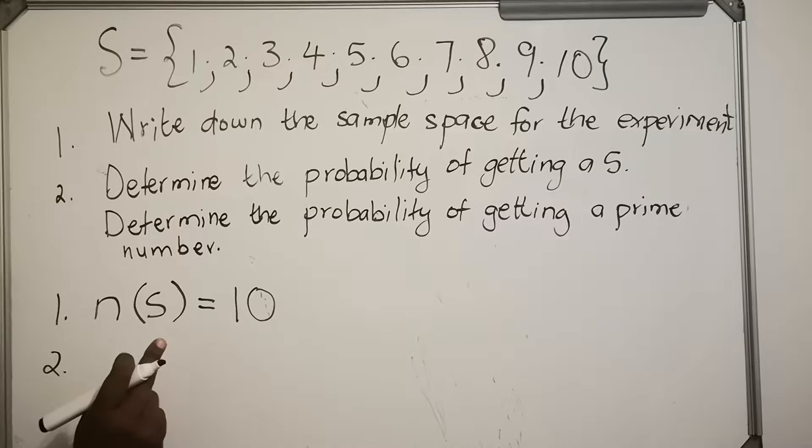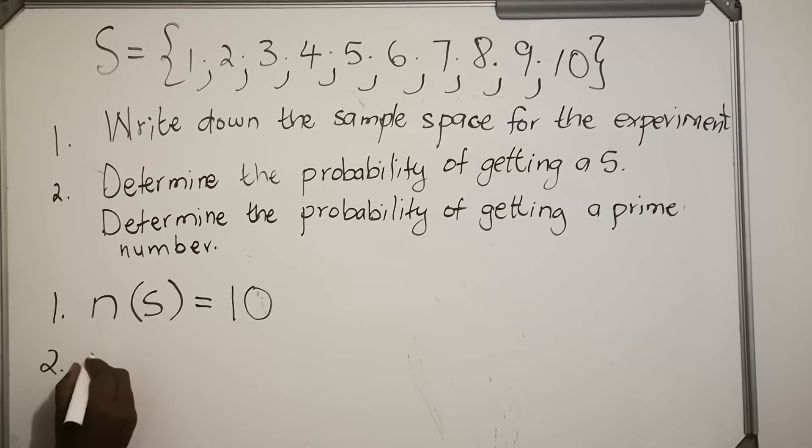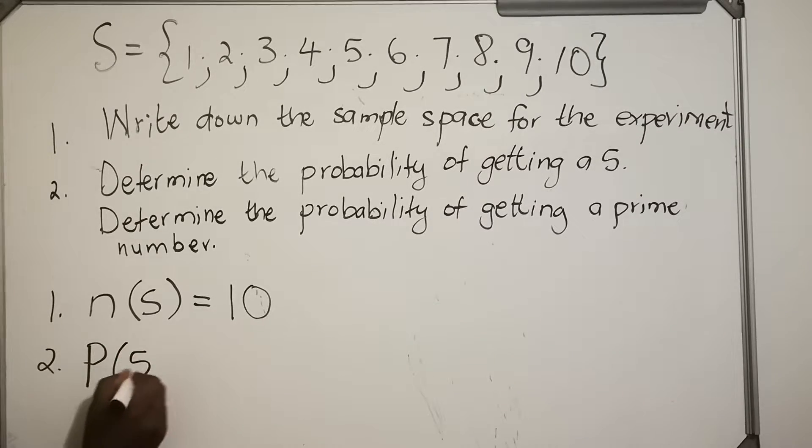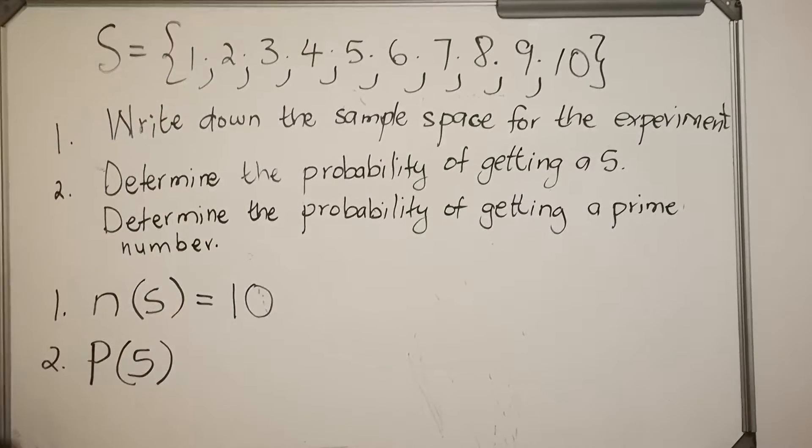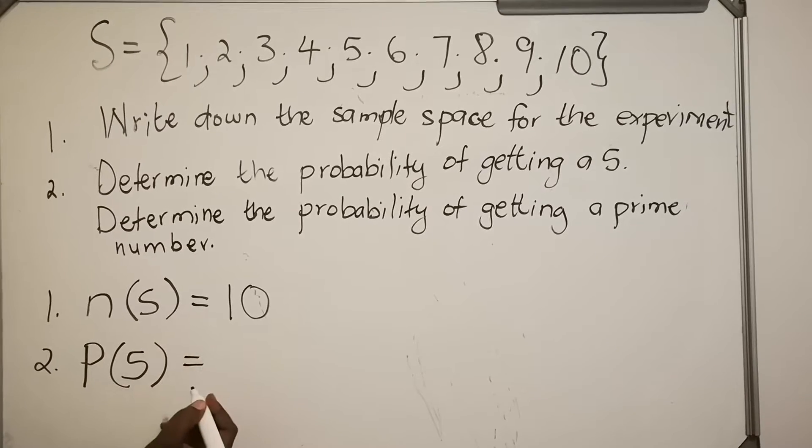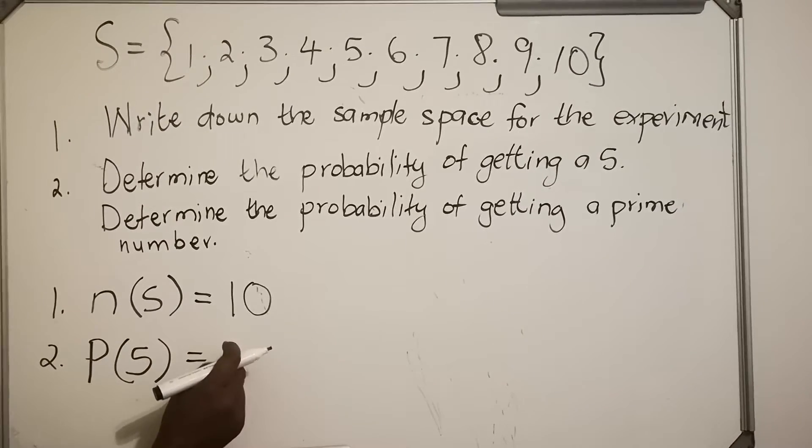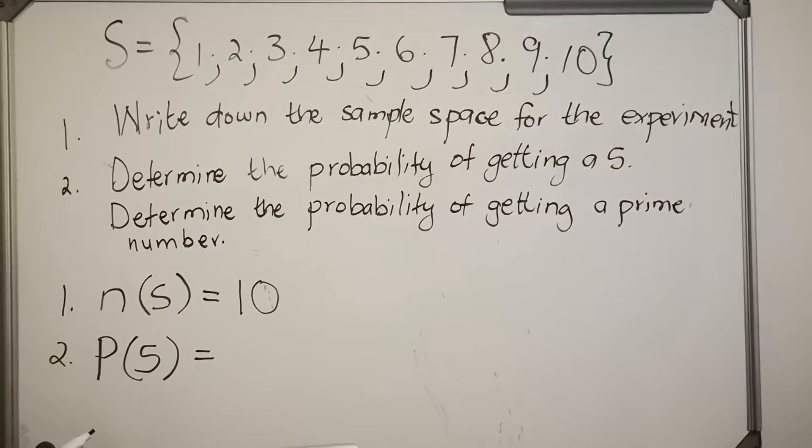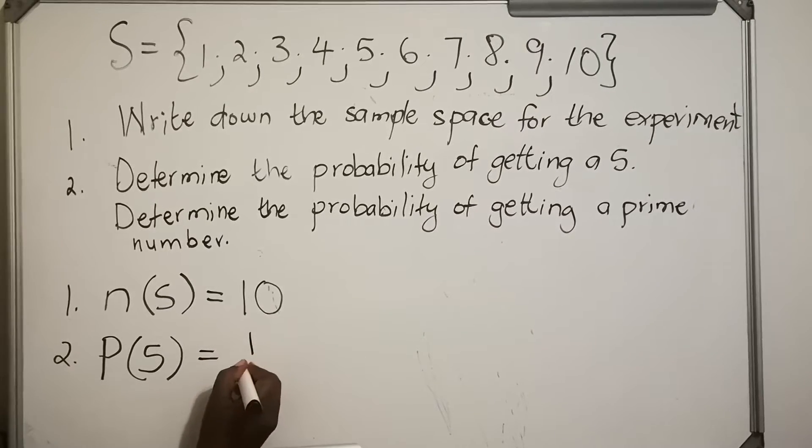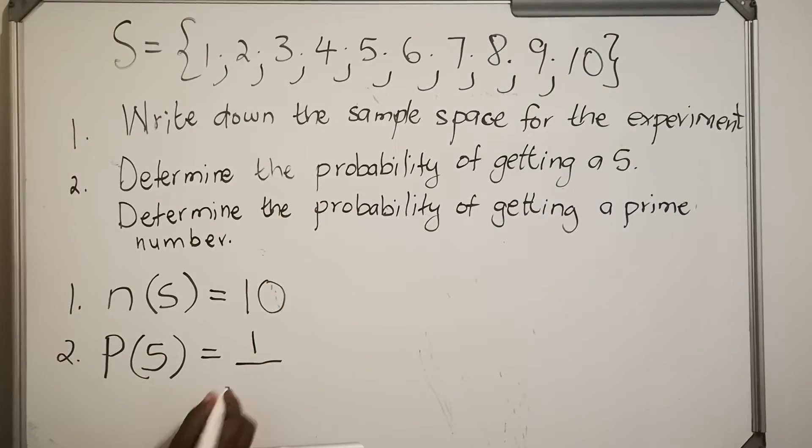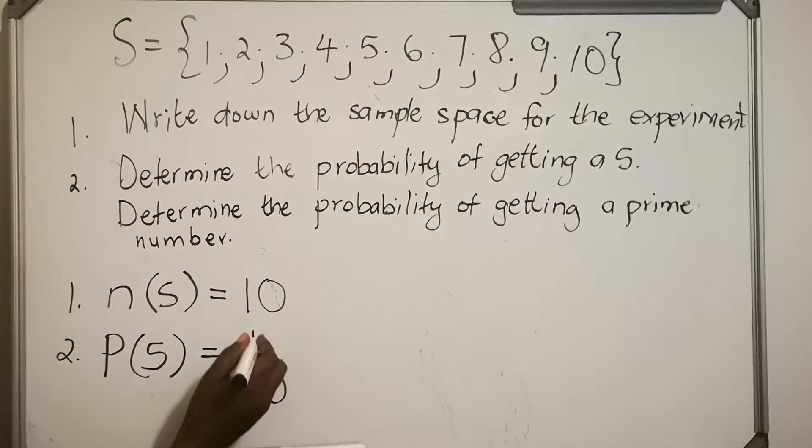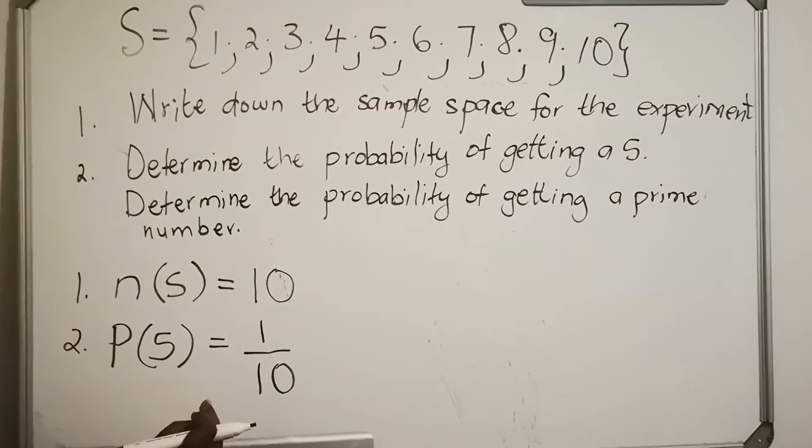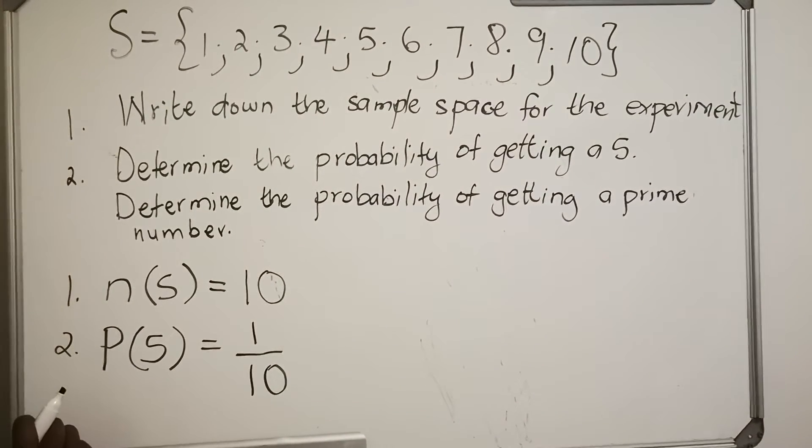So this question is asking for probability. You have probability of 5. The probability of getting a 5, according to our formula, is the total number of outcomes that we have. How many 5s do we have in our sample space? We have 1 out of how many possible outcomes? 10. So you have 1 chance out of 10 chances to get a 5, so 1 over 10. This is how you write probability. Now the third one.